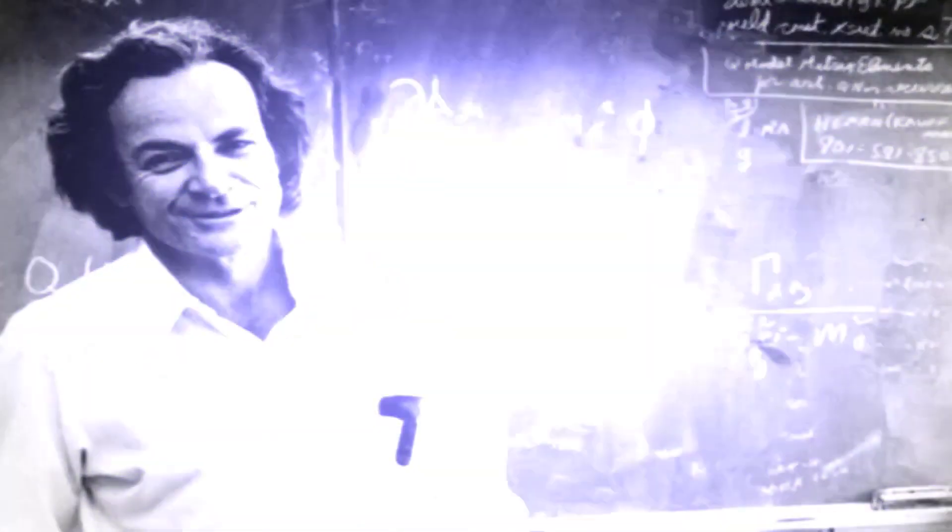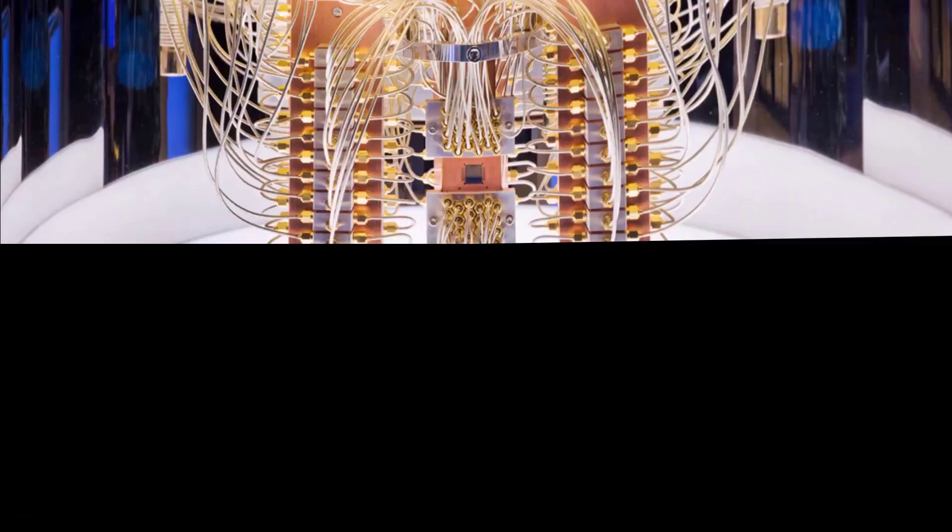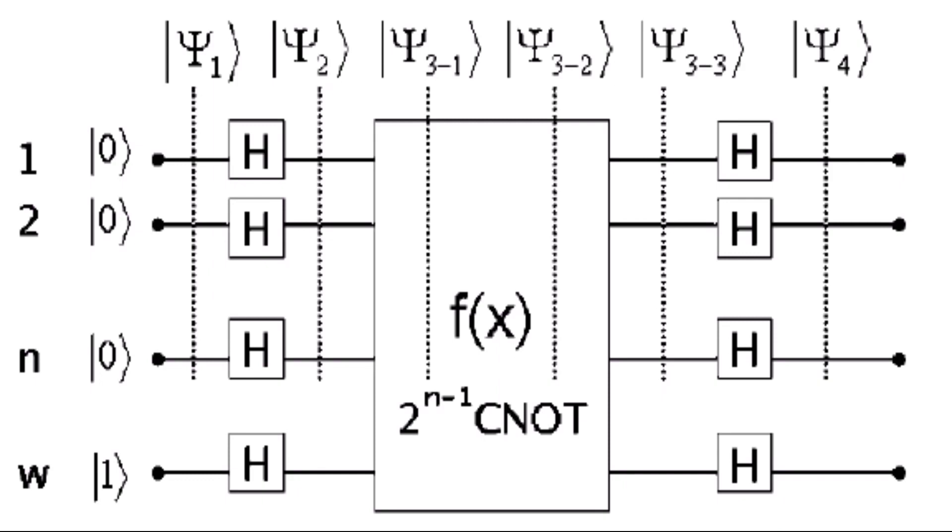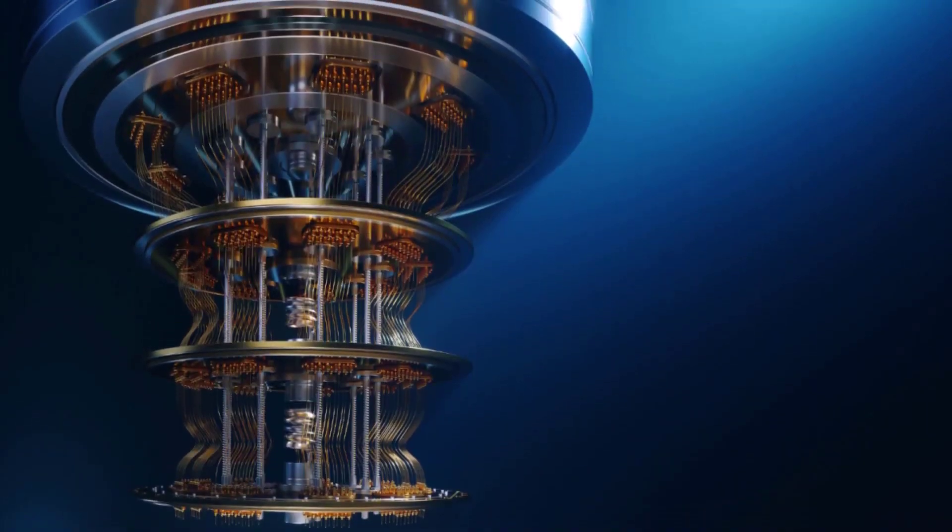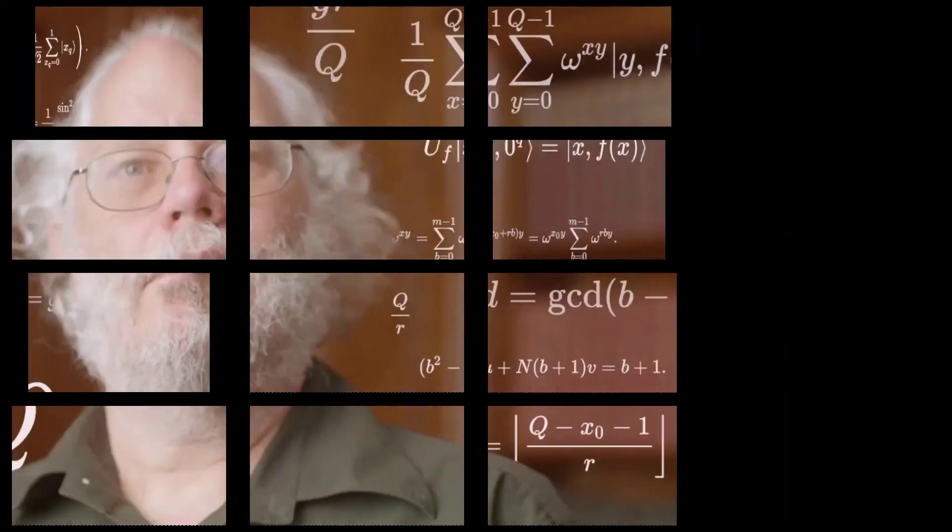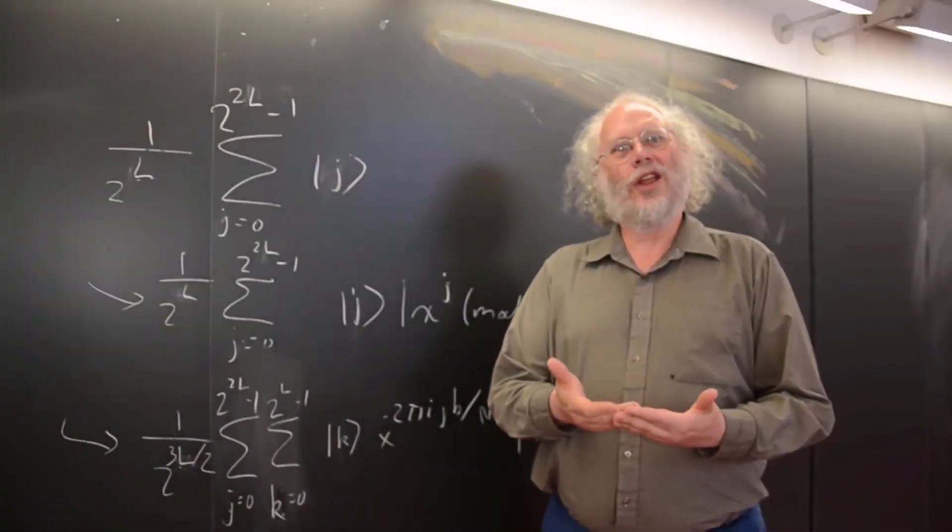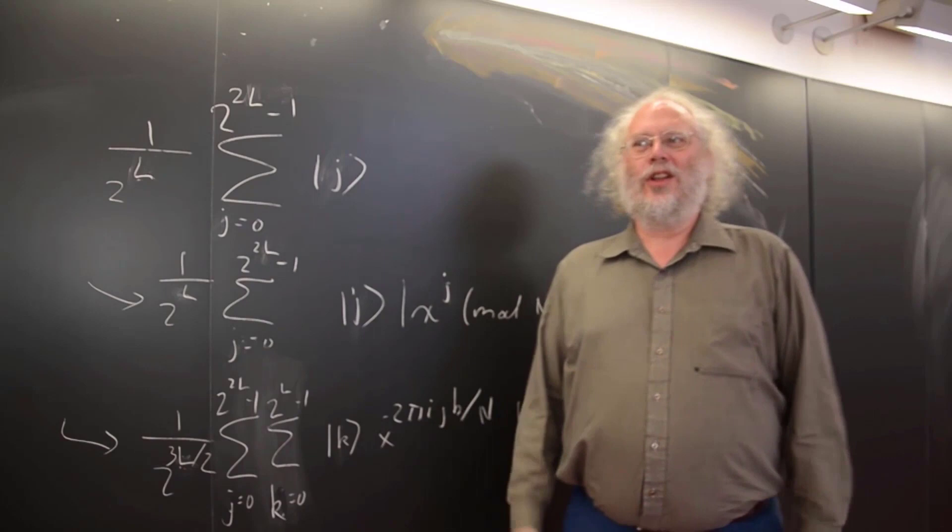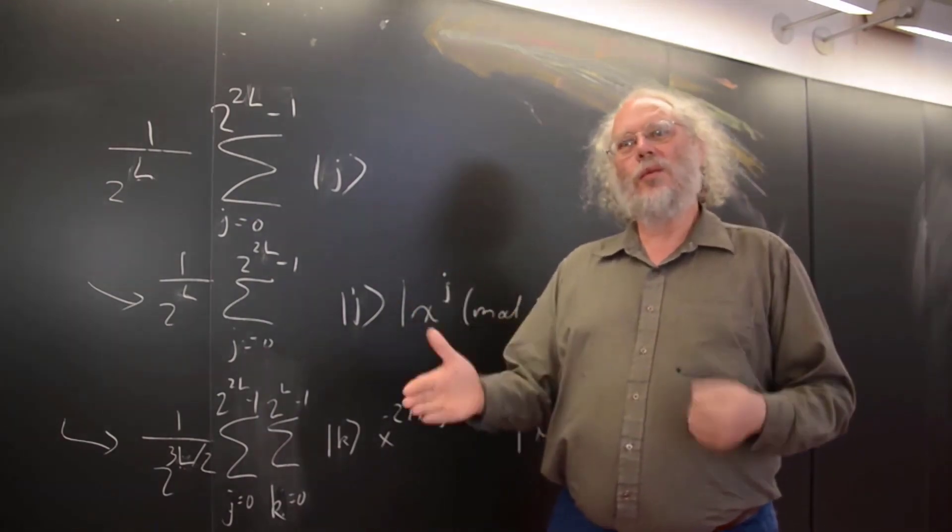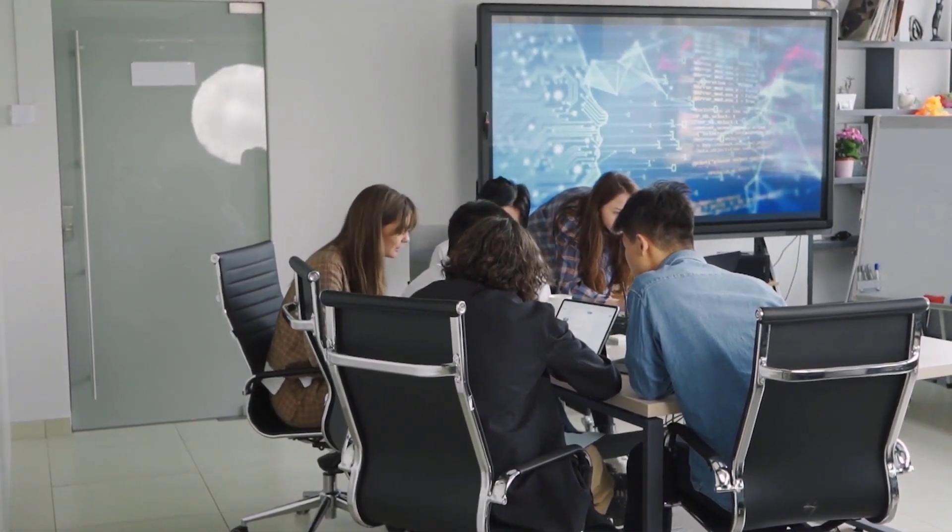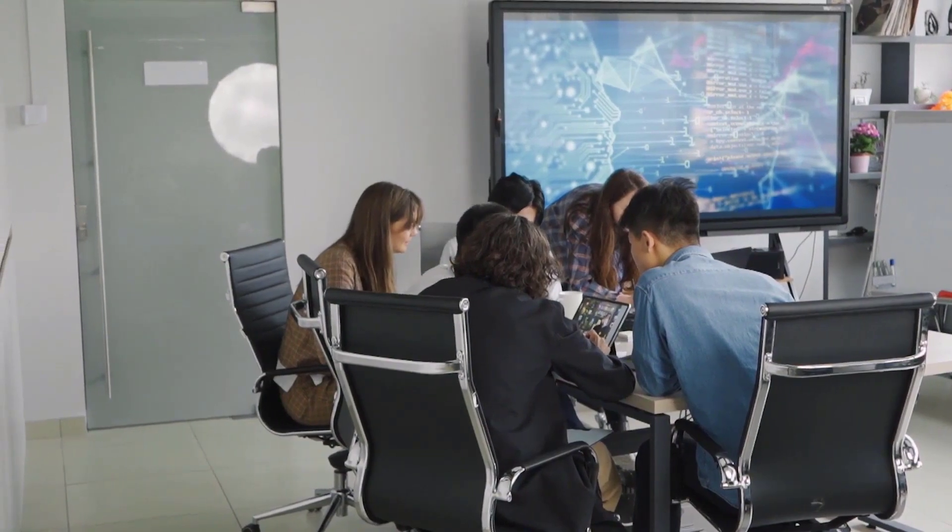In 1985, British physicist David Deutsch described the first universal quantum computer which could theoretically perform any computation that a classical computer could. In 1992, Deutsch developed the first quantum algorithm, the Deutsch-Josa algorithm, demonstrating quantum computing's potential efficiency. In 1994, Peter Shaw, an American mathematician, developed Shaw's algorithm, a quantum algorithm capable of factoring large numbers exponentially faster than any known classical algorithm. This groundbreaking discovery raised concerns about the future of internet security, as Shore's algorithm could potentially break widely used encryption methods like RSA.